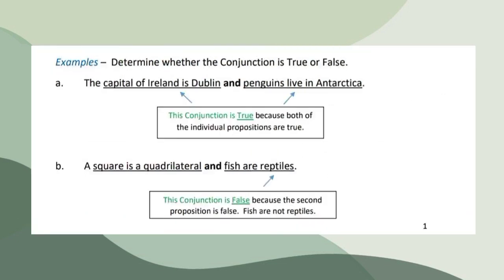So let's have an example for conjunction. Let's determine whether the conjunction is true or false. Number one. The capital of Ireland is Dublin and penguins live in Antarctica. This conjunction is true because both of the individual propositions are true. Number two. A square is a quadrilateral and fish are reptiles. This conjunction is false because the second proposition is false, fish are not reptiles.